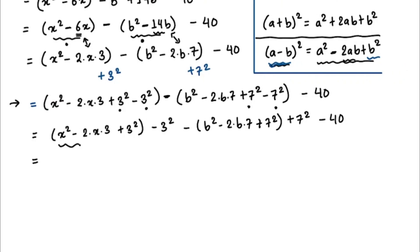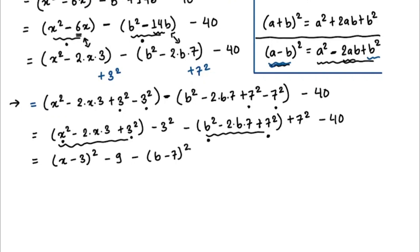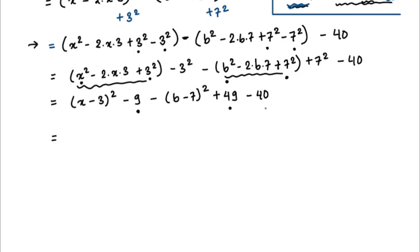Now we convert each bracket using the formula a squared minus 2ab plus b squared equals (a minus b) squared. So (x squared minus 2·x·3 plus 3 squared) becomes (x minus 3) squared, and we have minus 9 outside. Then minus (b minus 7) squared, plus 49, and minus 40. Since minus 9 plus 49 is plus 40, and plus 40 minus 40 equals zero, those three numbers all cancel out.